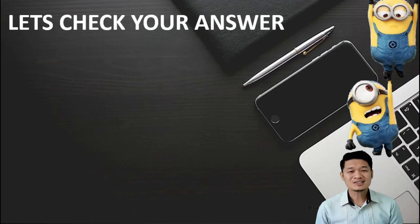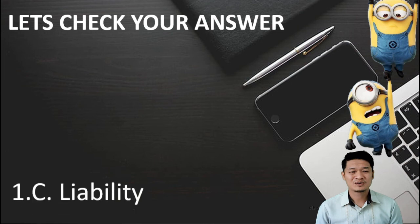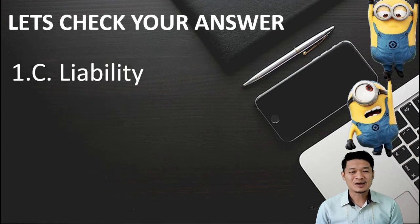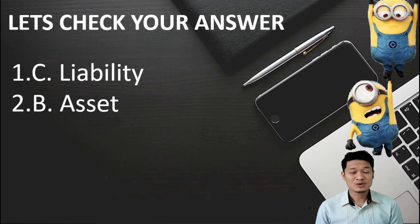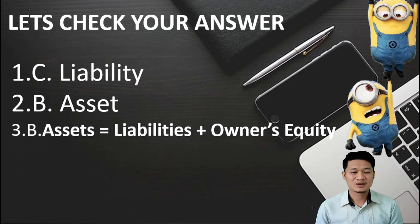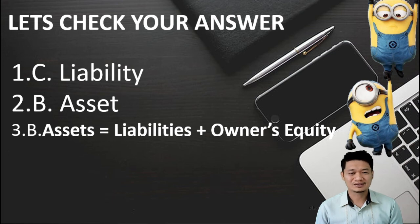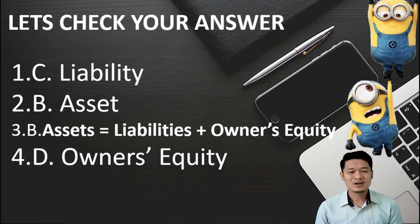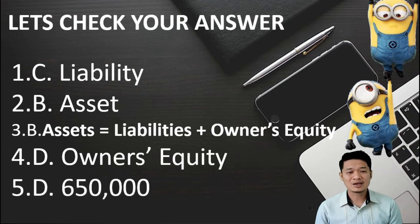Now, let's check your answers. For number 1, the correct answer is letter C, liability. For number 2, the correct answer is letter B, asset. For number 3, the correct answer is letter B, assets equals liabilities plus owner's equity. For number 4, the correct answer is letter D, owner's equity. And for number 5, the correct answer is letter D, P650,000.